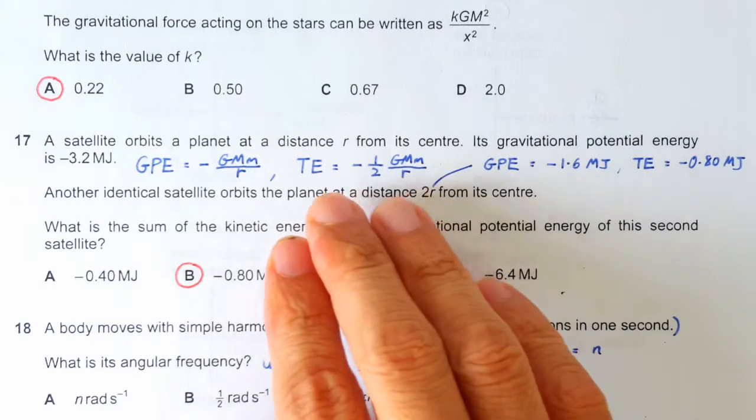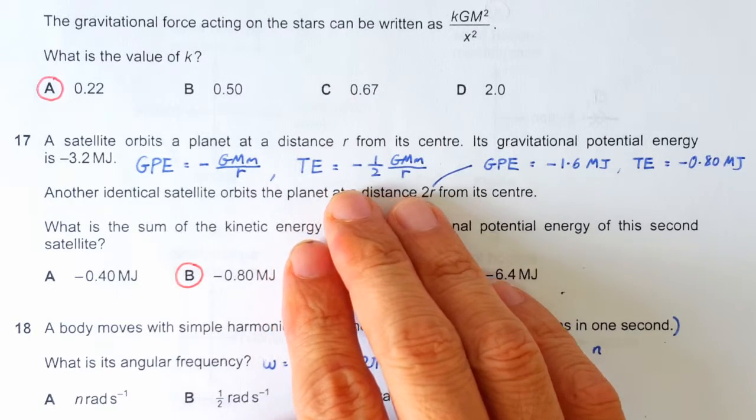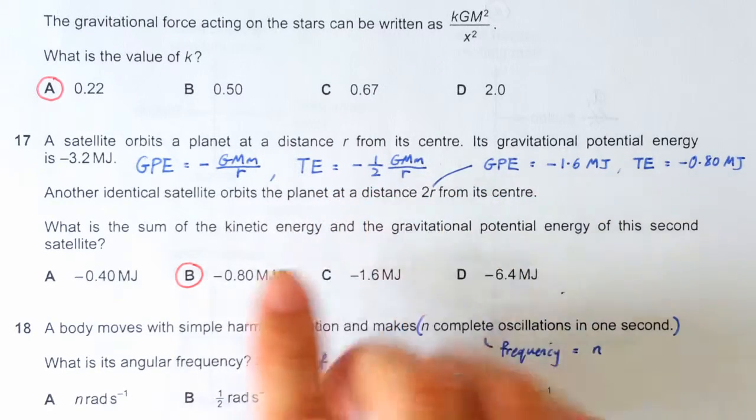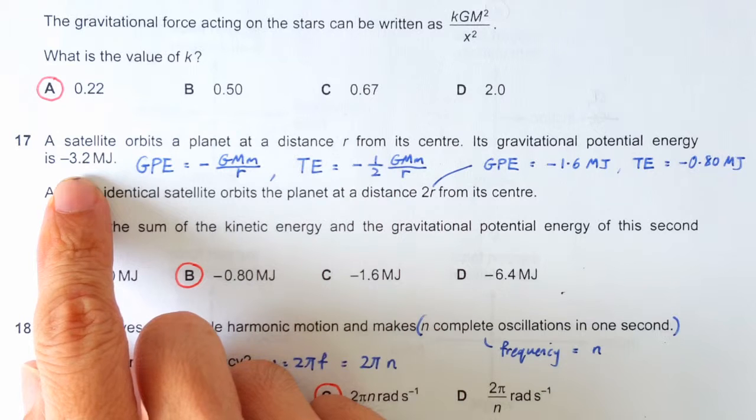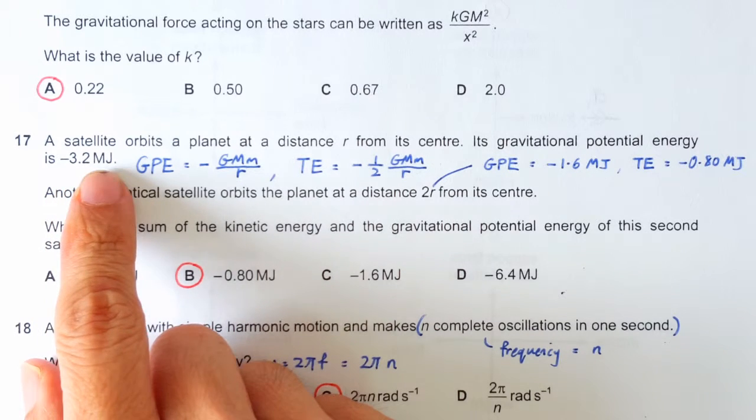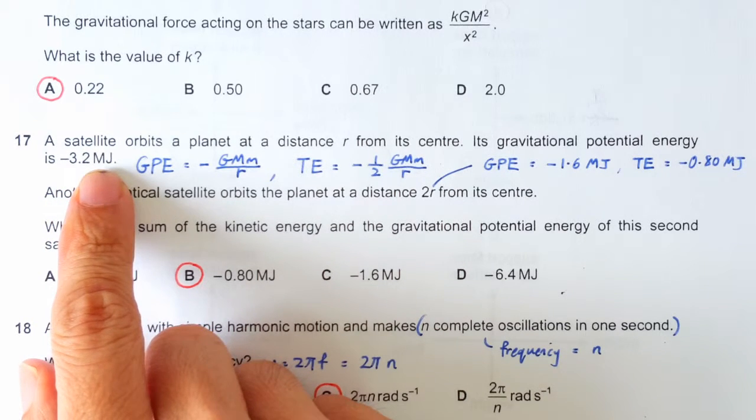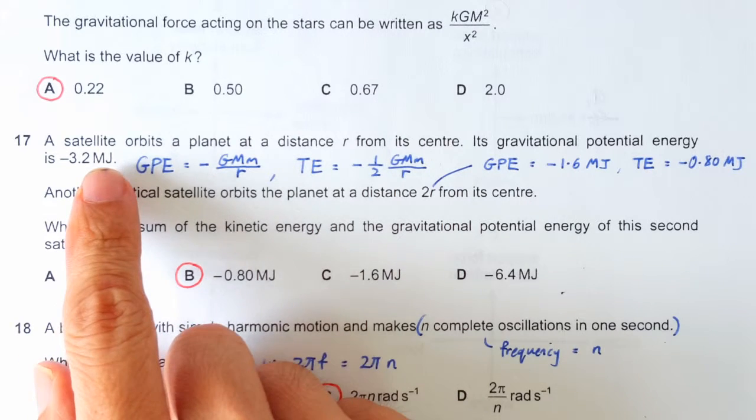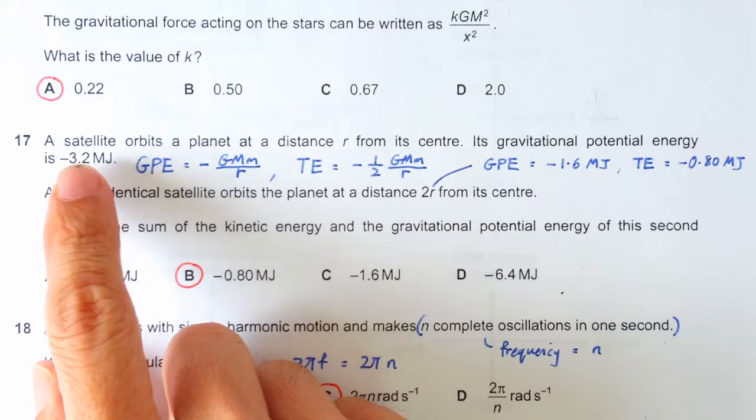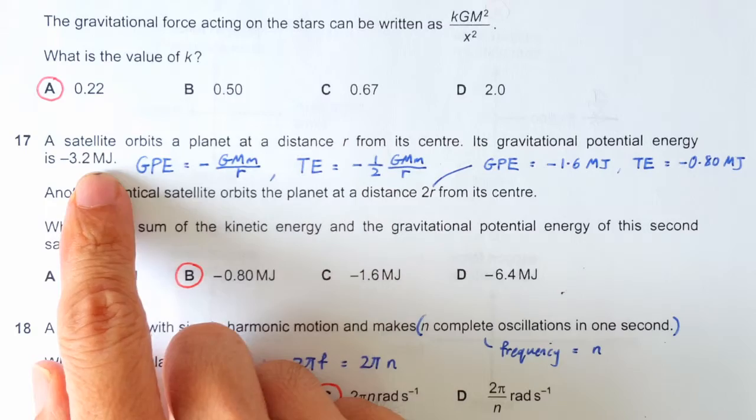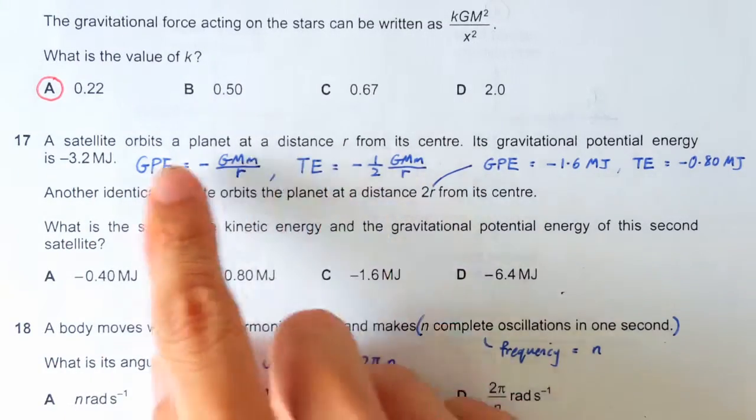So I repeat, the total energy of an orbiting satellite is actually equal to half its GPE. So if the satellite is having a GPE of negative 3.2 MJ, we can actually tell straight away that this satellite's total energy is negative 1.6 MJ, because total energy is half of your GPE.